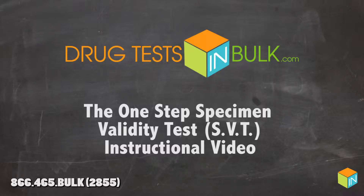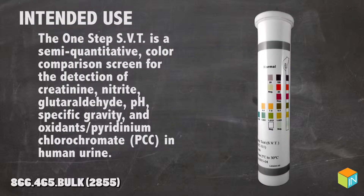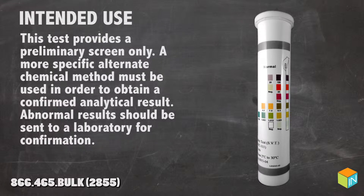Welcome to DrugTestInBulk.com's One Step Specimen Validity Test instructional video. The One Step Specimen Validity Test, or SVT, is a semi-quantitative color comparison screen for the detection of creatinine, nitrate, glutaraldehyde, pH, specific gravity, and oxidants in human urine. This test provides a preliminary screen only.